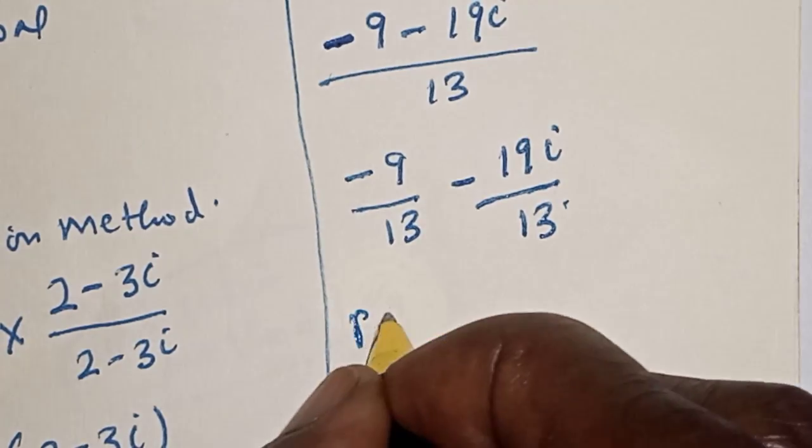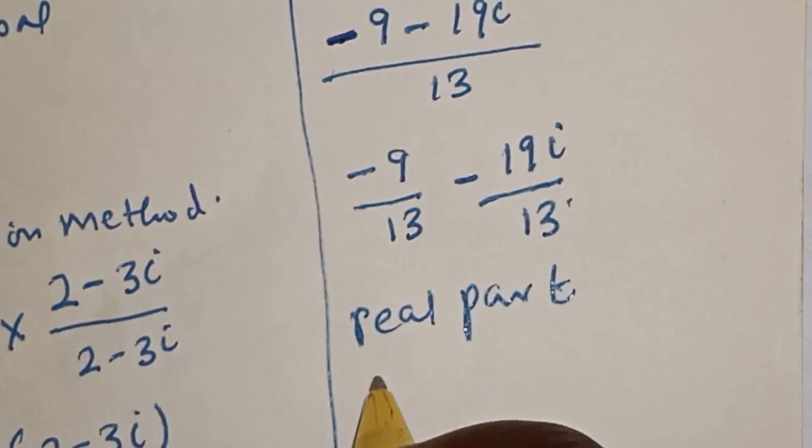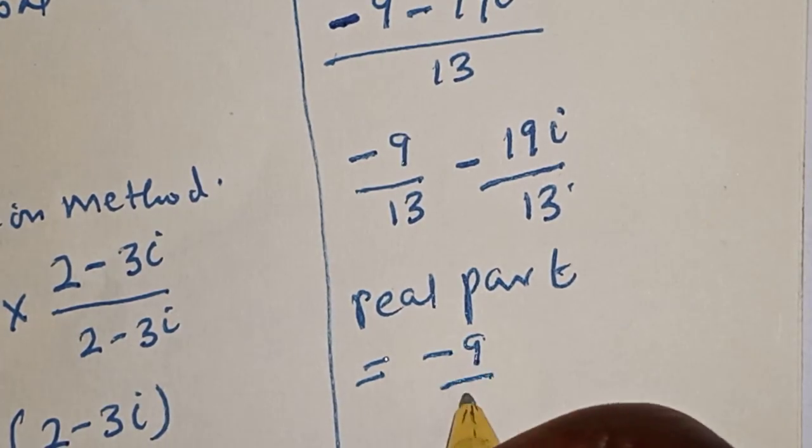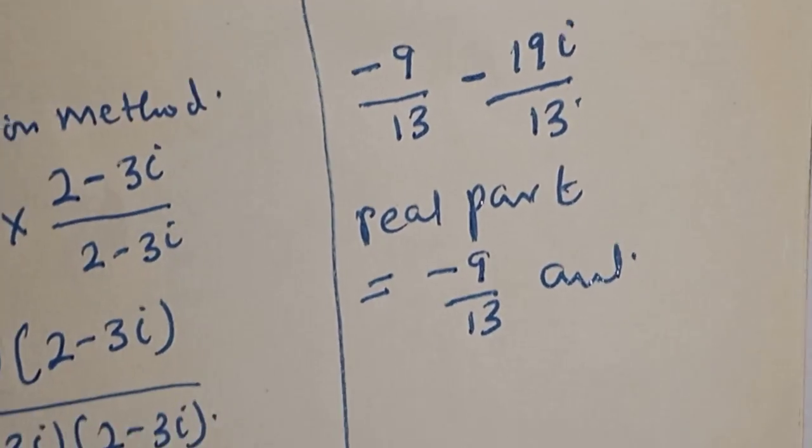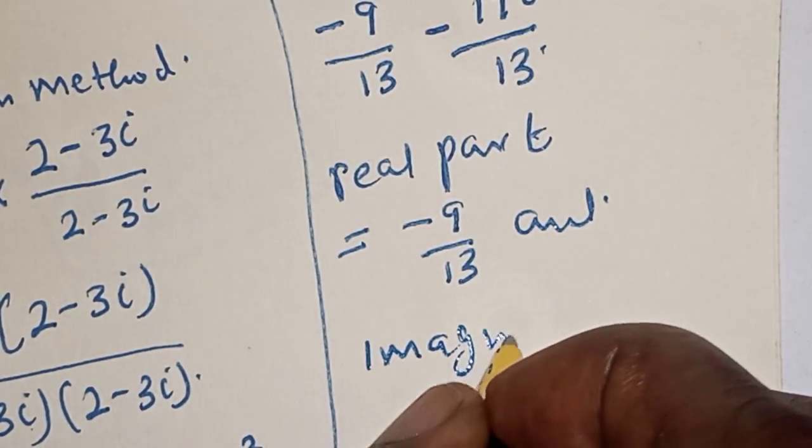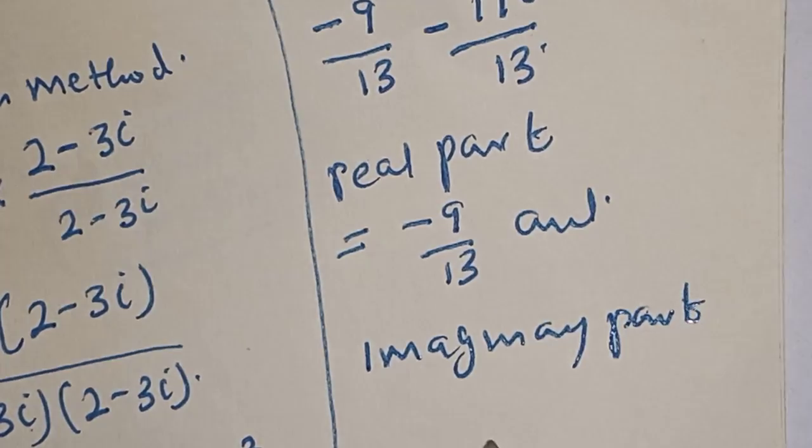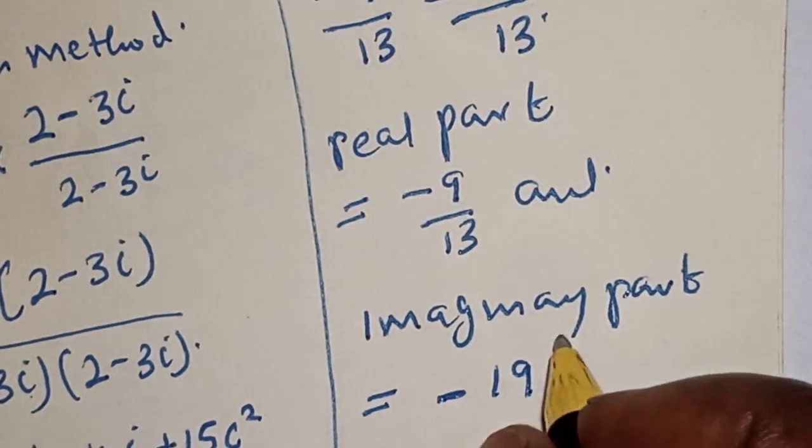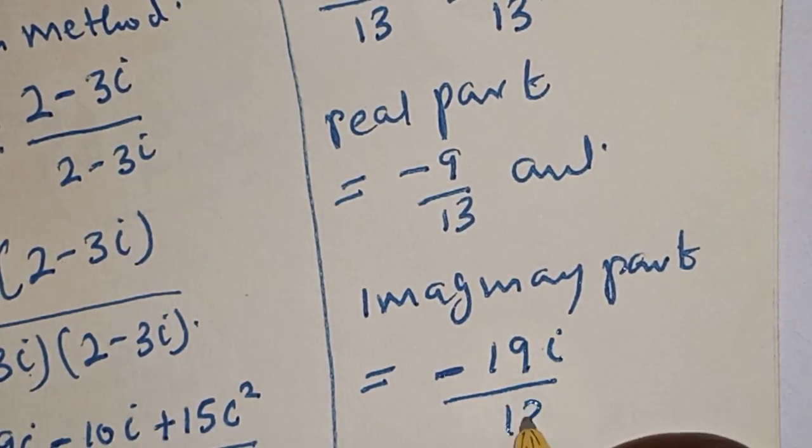Therefore, the real part is equal to minus 9 over 13 and the imaginary part is equal to minus 19i over 13.